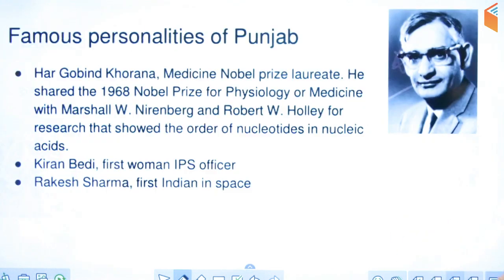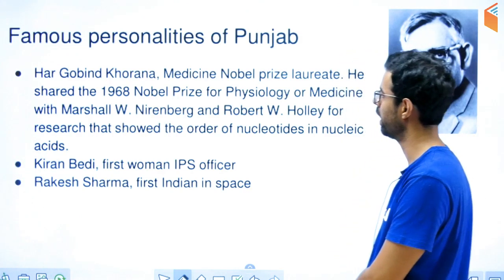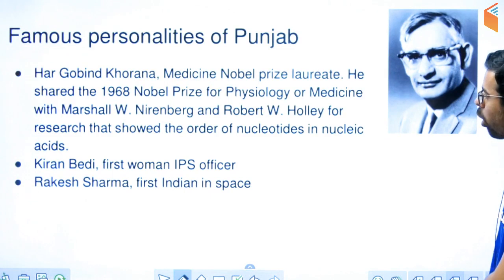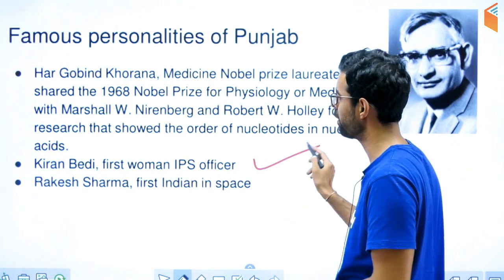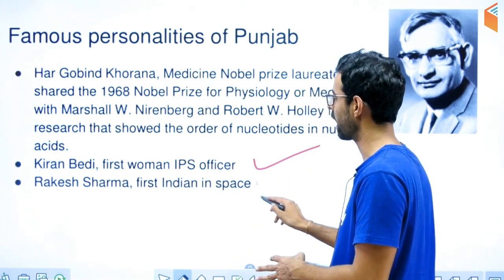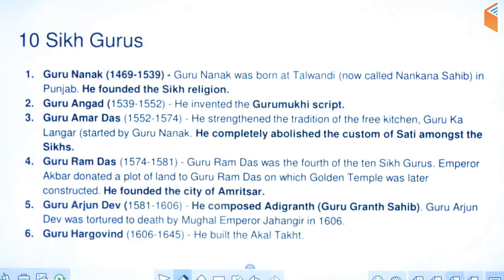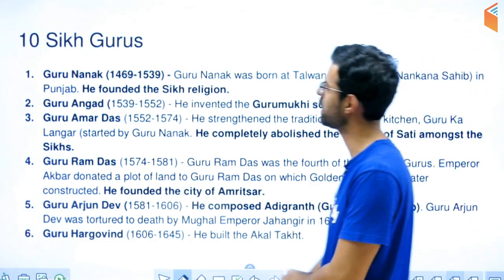Now let's talk about famous personalities. Har Gobind Khorana, whose name you must have heard, was awarded the Nobel Prize in Medicine in 1968 — shared with Nirenberg and Holley. Kiran Bedi, the first woman IPS officer, currently Lieutenant Governor of Puducherry, also belongs to Punjab. Rakesh Sharma, the first Indian to go to space, also belongs to Punjab.